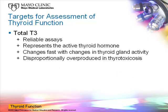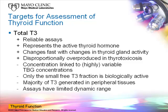Total T3 has also got reliable assays, and it represents the active thyroid hormone. Changes occur fast with changes in thyroid gland activity, and it can have occasionally the advantage of being selectively overproduced in thyrotoxicosis, particularly early on. However, similar to total T4, the concentration is linked to the highly variable thyroid hormone binding globulin concentrations, and only a small free fraction of T3 is biologically active. Furthermore, the circulating levels of T3 may not be representative of the levels found at the actual tissue sites, as the majority of T3 is actually not secreted from the thyroid gland but manufactured in peripheral tissues on demand. Finally, all T3 assays are competitive assays and hence suffer from the same problems of a limited dynamic range.